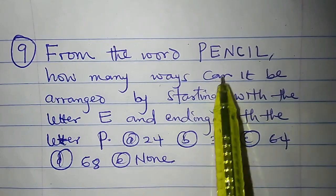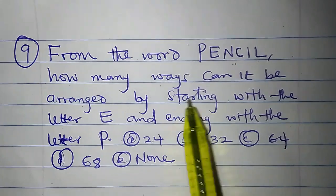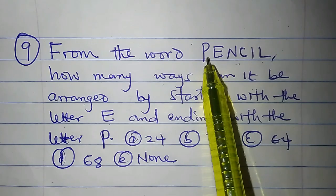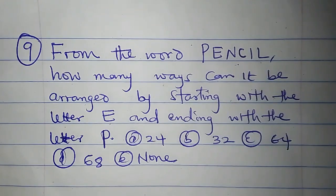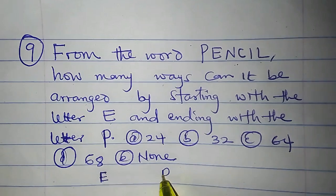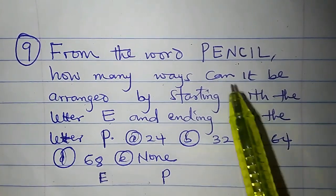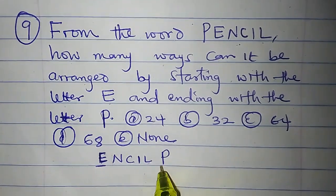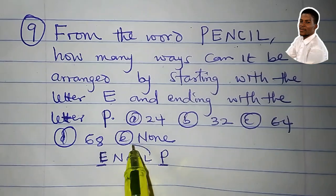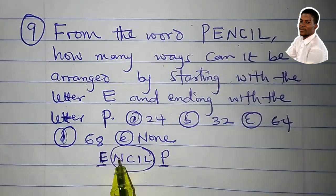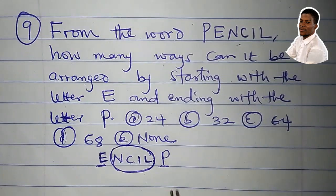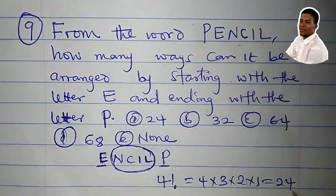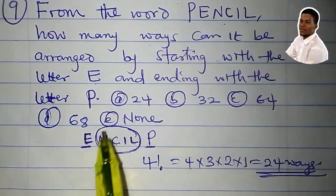Question 9: from the word PENCIL, how many ways can it be arranged starting with the letter E and ending with the letter P? Since E and P are fixed in their positions, we only arrange the remaining letters: N, C, I, and L. These four letters can be arranged in 4 factorial ways, which is 4 × 3 × 2 × 1 = 24 ways. This is option E.